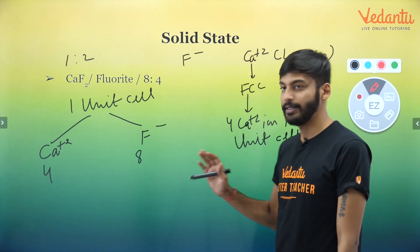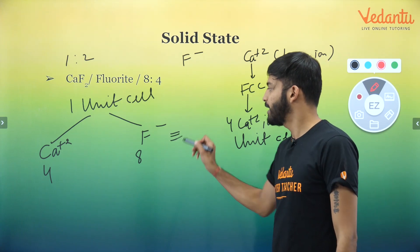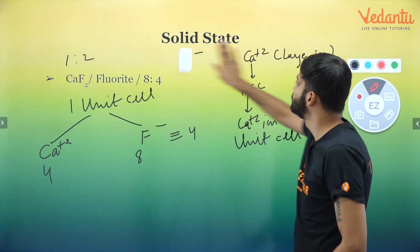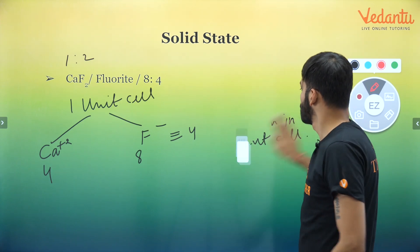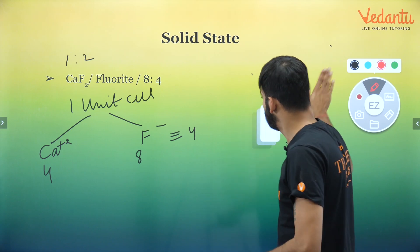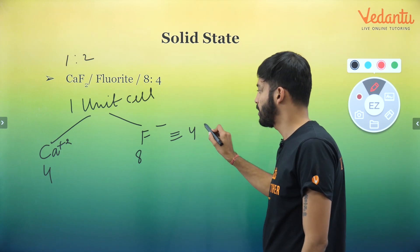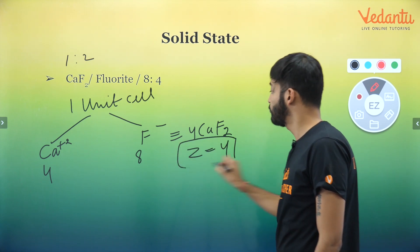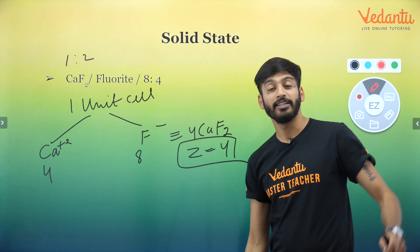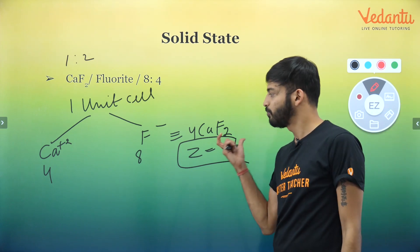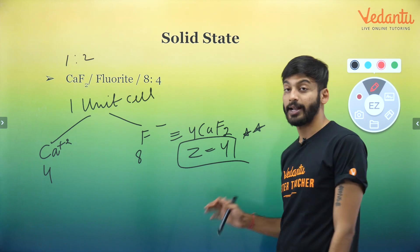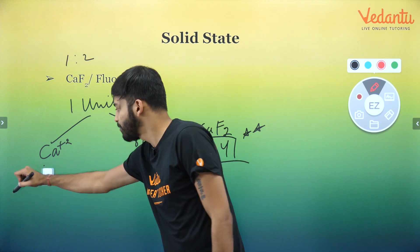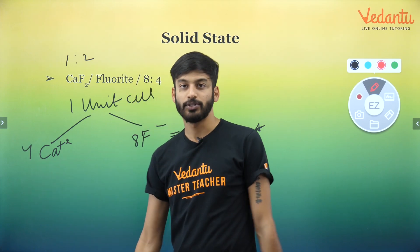The ratio is 1:2, so that means collectively the Z value will be 4. If we talk about CaF₂, Z equals 4. There are 4 CaF₂ units in one unit cell. So we have 8 F⁻ and 4 Ca²⁺.